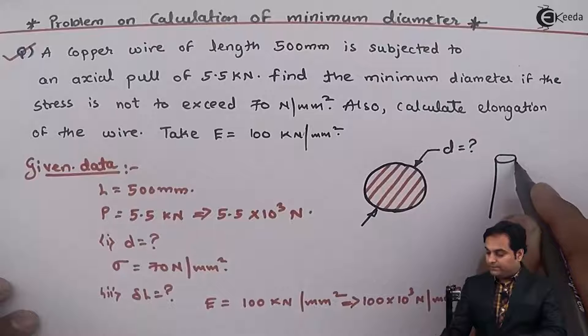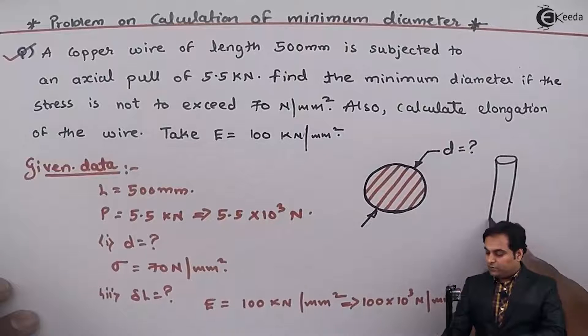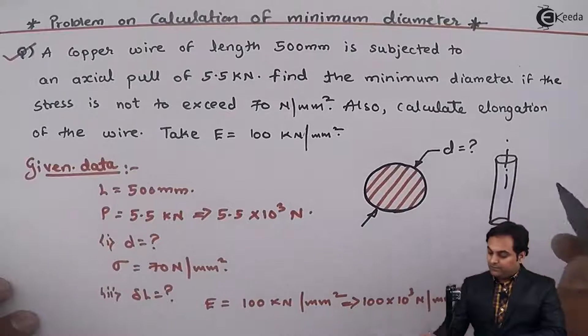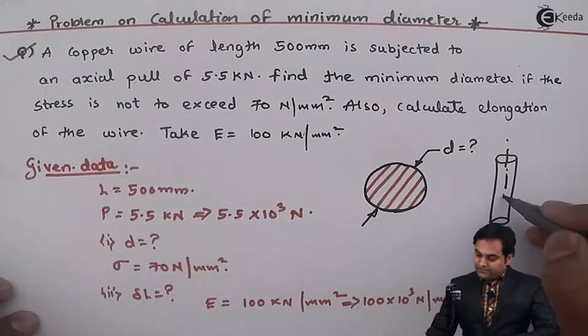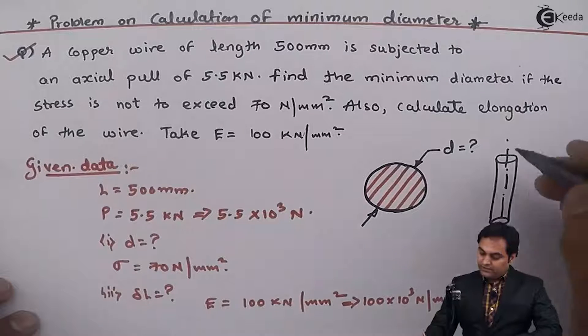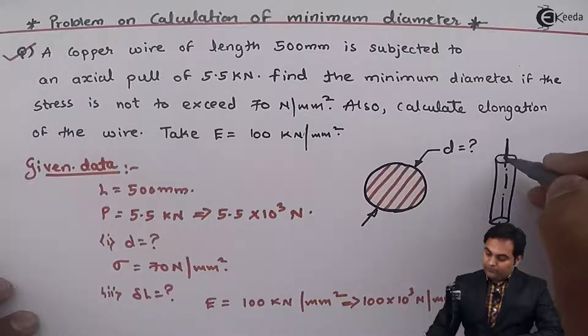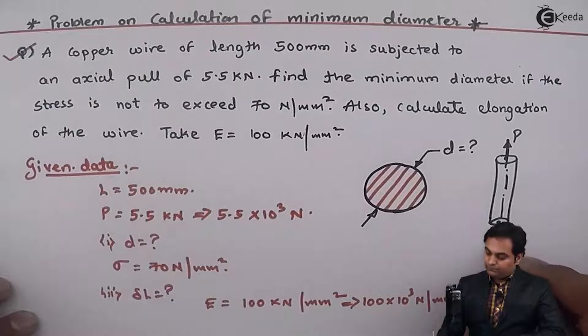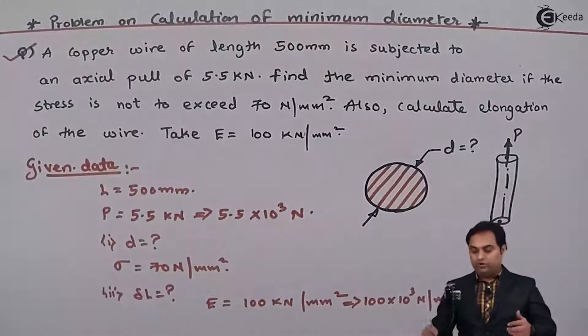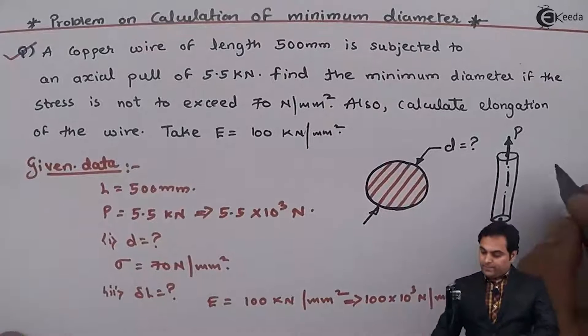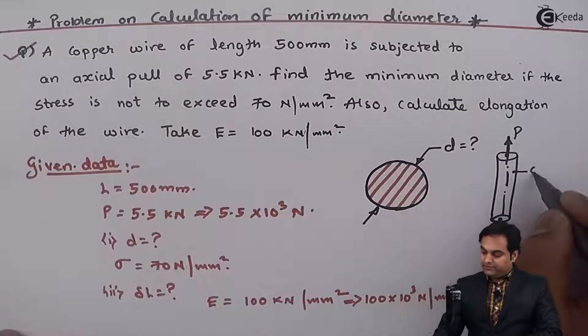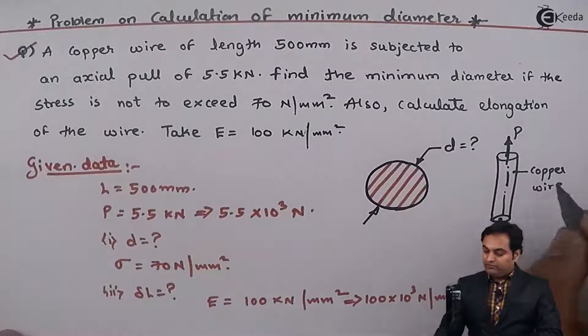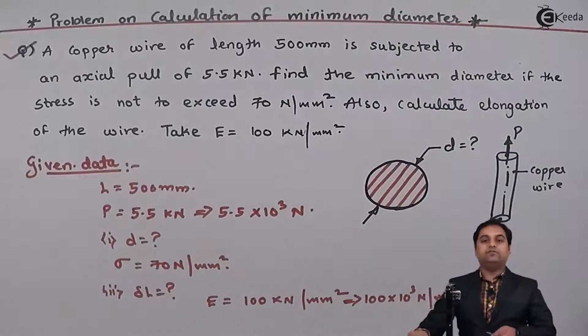And then this wire is being pulled by applying tensile stress or I can say a pull type of load. So here this rod is being pulled, or a copper wire. I will write it that here this is a copper wire and we have to find how much is the diameter for this copper wire.